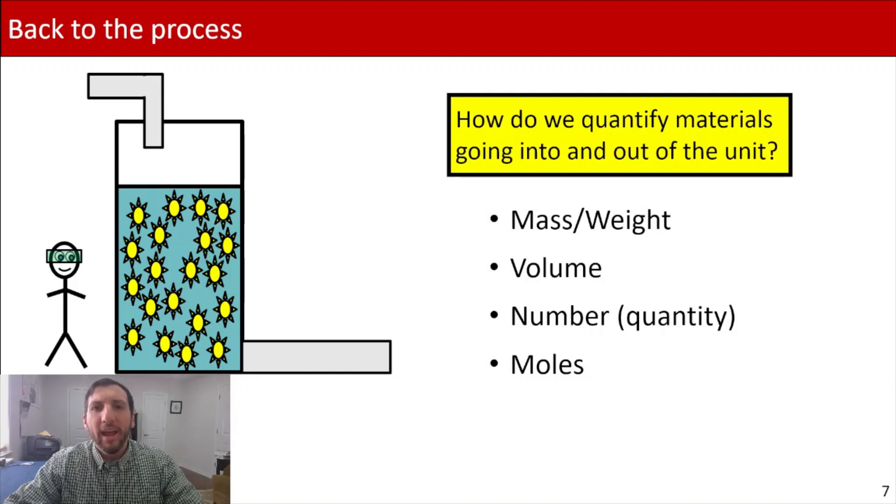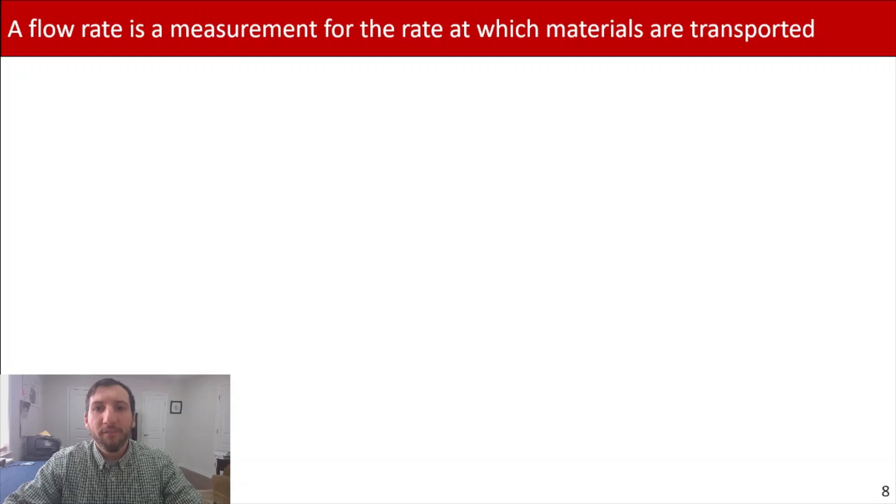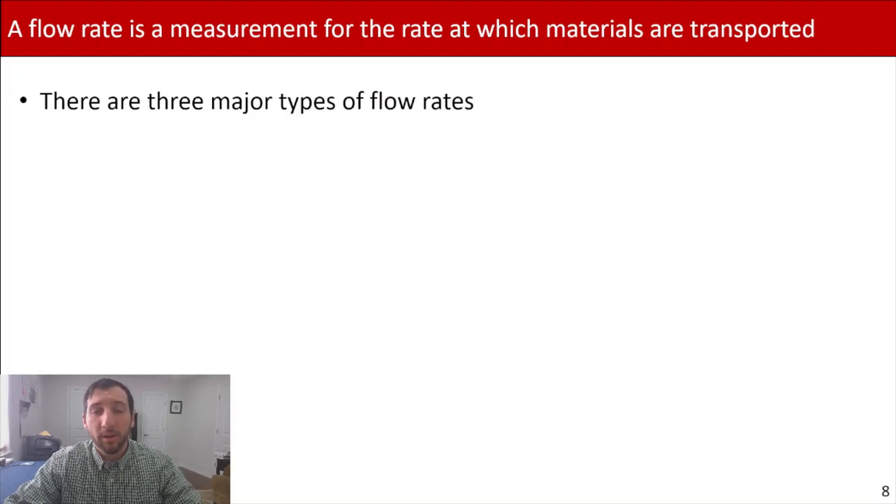One type of number or quantity that you could be measuring and is something we commonly will deal with on the chemical side are moles. So we've got a couple of different options of what we can be measuring for materials going into and out of a process. And so there's a particular term that we deal with when quantifying materials going into and out of the process. And that term is a flow rate. That flow rate is the measurement of materials that are being transported into or out of our system. And when we deal with flow rates for a process, there's three major types of flow rates that we'll be working with.